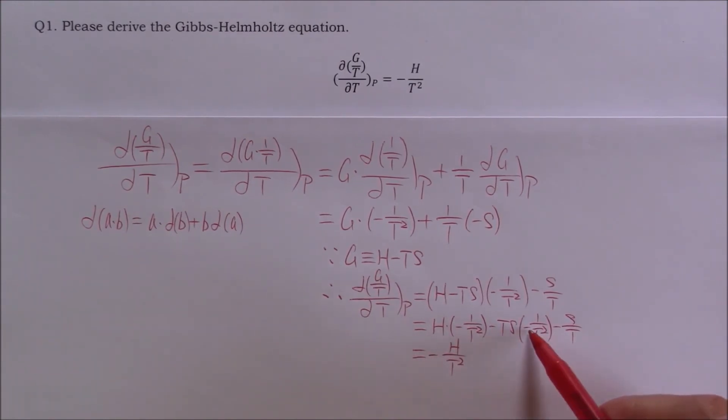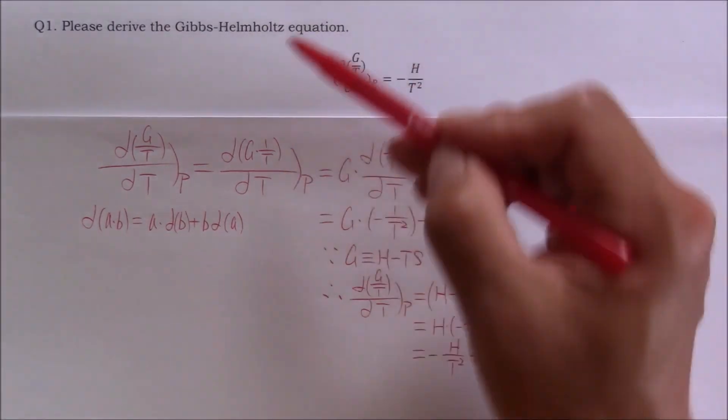Negative multiply negative become positive. We just copy down the third term. The second term and the third term together is equal to zero. Then we will get the Gibbs-Helmholtz equation.